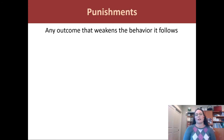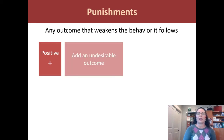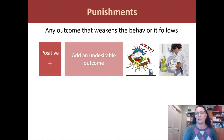Now let's talk about punishments — outcomes that weaken or discourage behavior. Just like reinforcement, there are positive and negative punishments. With positive punishment, we add an undesirable outcome — something the learner does not want. In psychology, sometimes we shock the learner as a punishment. In real life, you might be assigned more chores as a punishment for something you've done wrong. We add something the learner doesn't like.